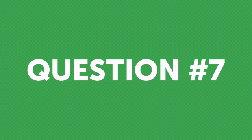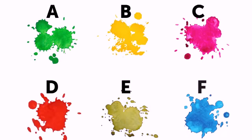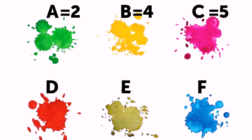Question seven. Let's make it a little easier. Choose a watercolor. If green A is your favorite, write down two points. Yellow B gives you four points. Pinky C stands for five points. Red D leaves you with one point. Original E option equals six points. And bluish F adds three points to your current number.